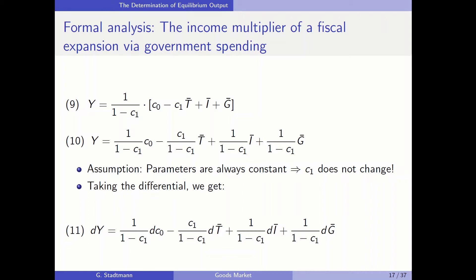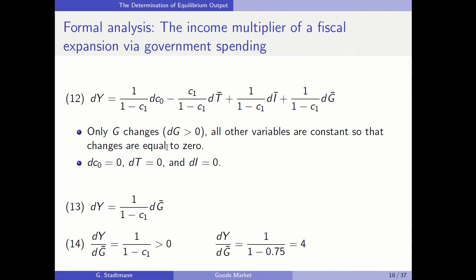Parameters are constant and therefore we don't have to differentiate with respect to c1. We have to write a d in front of each variable — a d in front of Y, a d in front of c0, a d in front of taxes, a d in front of investment, and a d in front of government spending. Afterwards we consider that only government spending changes, so dG is positive. All other variables are constant so their changes are equal to zero. For example, the autonomous component of consumption c0 is constant and does not change.